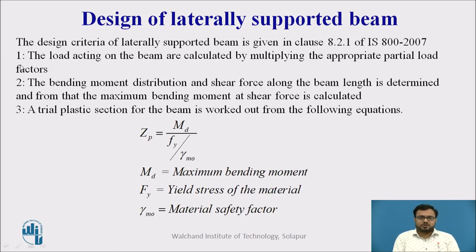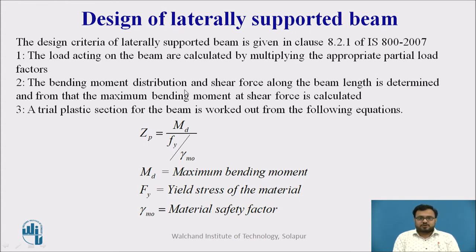We will now see the design steps. The design criteria for a laterally supported beam as per clause 8.2.1 of IS 800-2007: the first step is to calculate the loads acting on the beam by multiplying the appropriate partial safety factor. Then the bending moment distribution and shear force along the beam length are determined, and from that the maximum bending moment and maximum shear force are calculated.